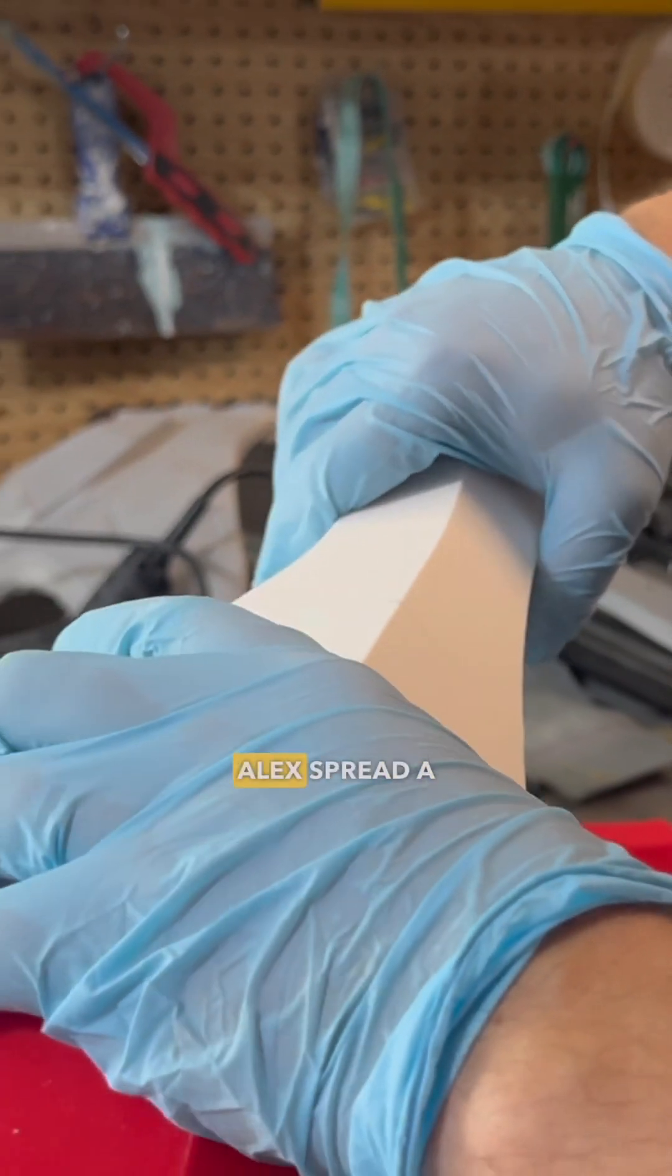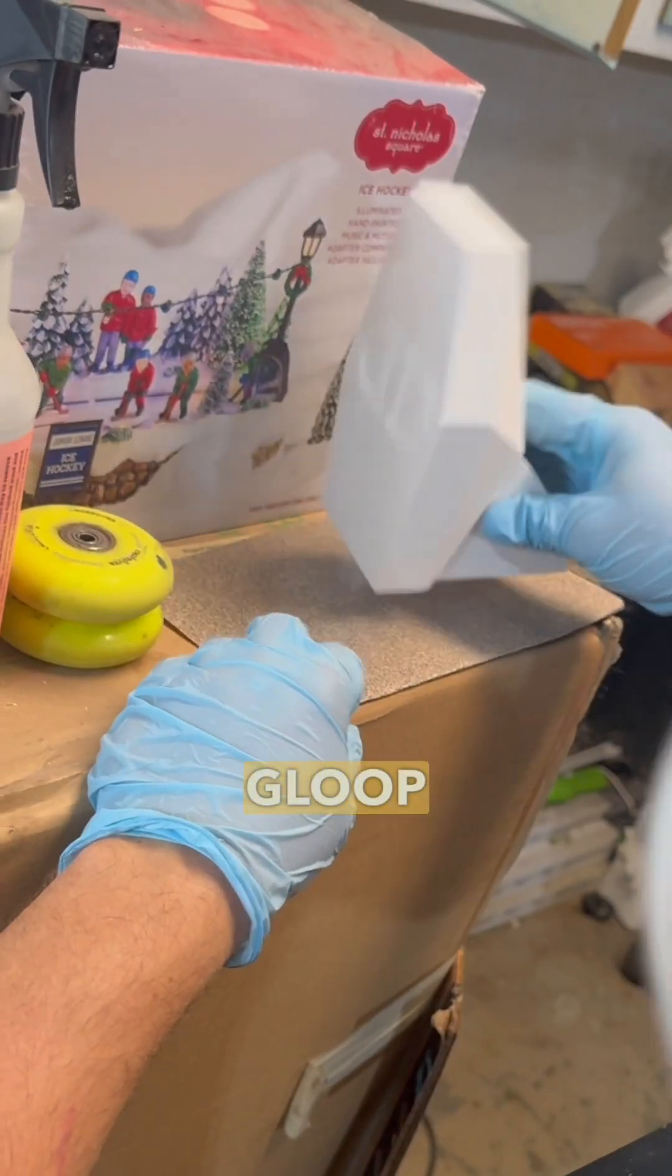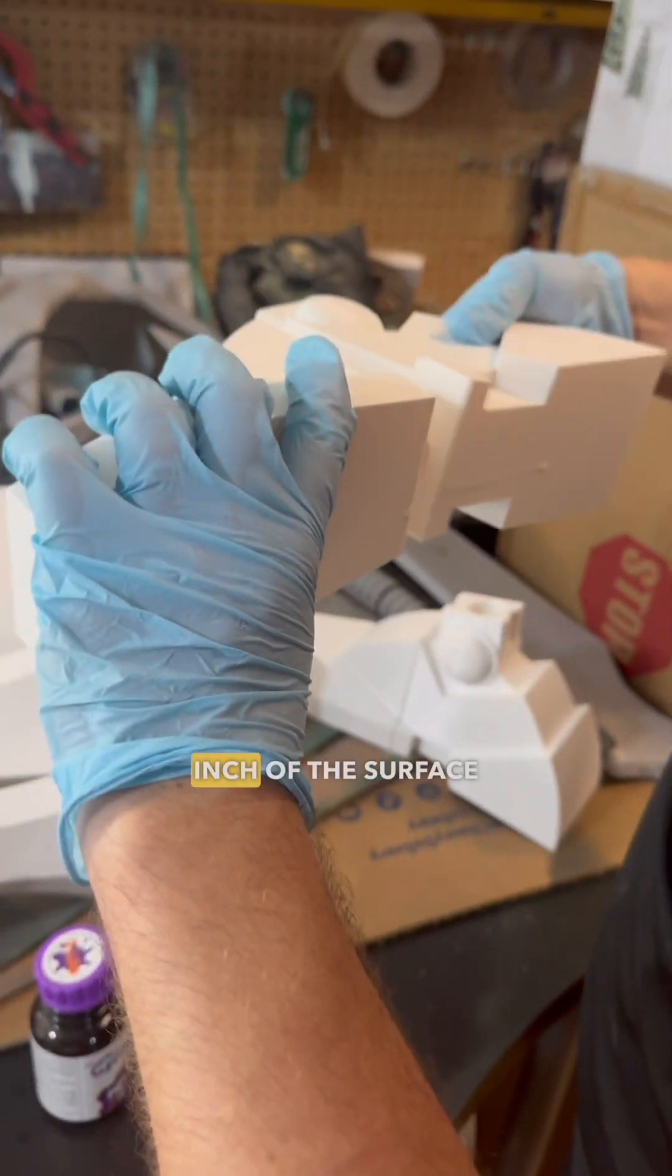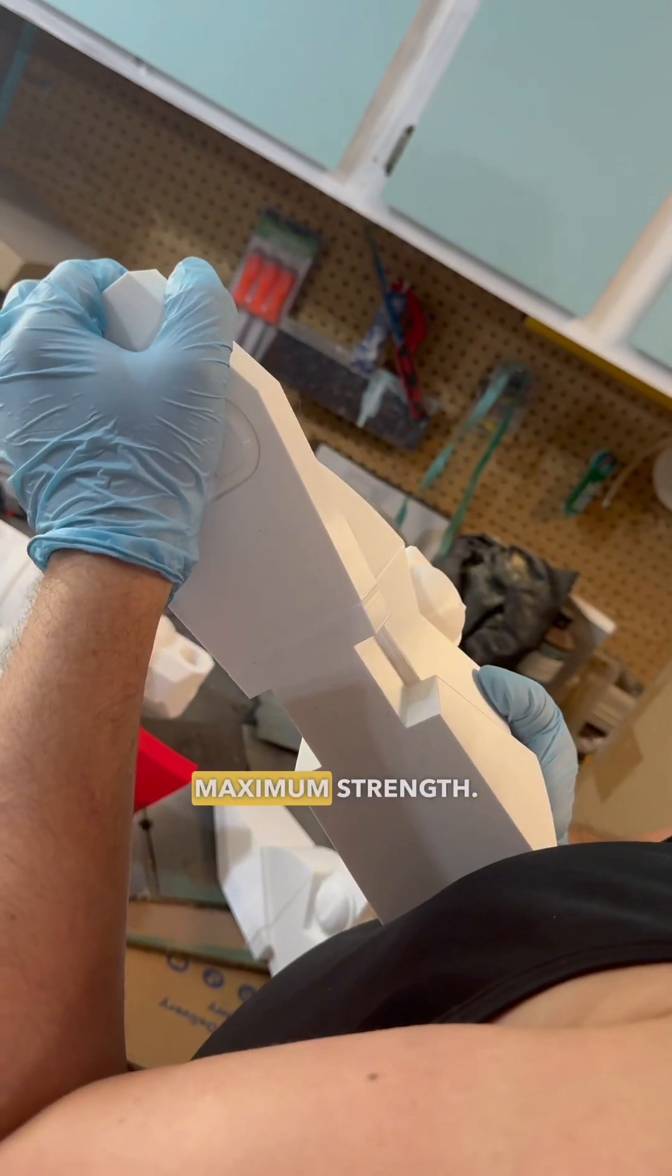Using a small brush, Alex spread a generous layer of the Gloop on each mating surface. And by generous, I mean like full coverage. The goal is to ensure every inch of the surface had contact for maximum strength.